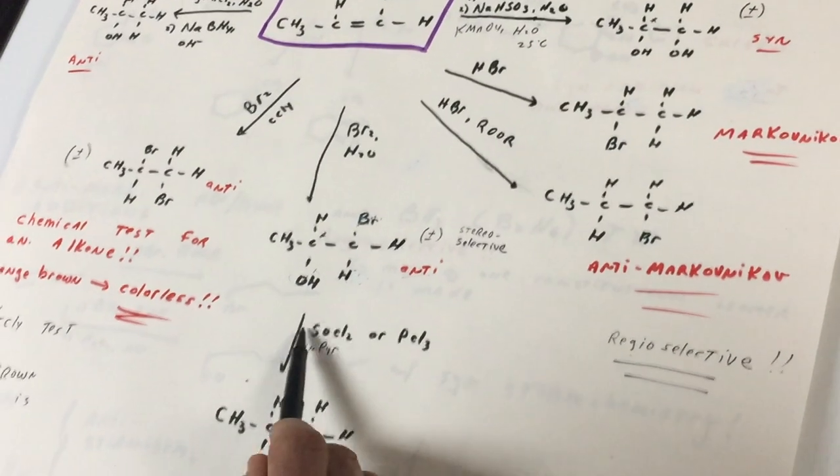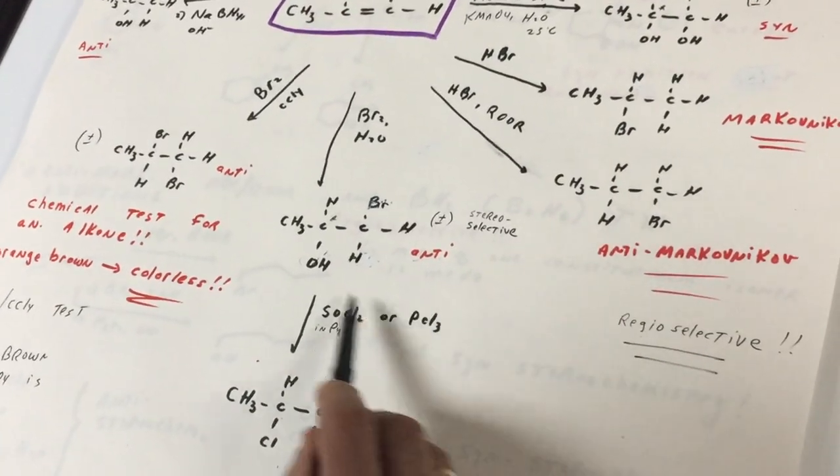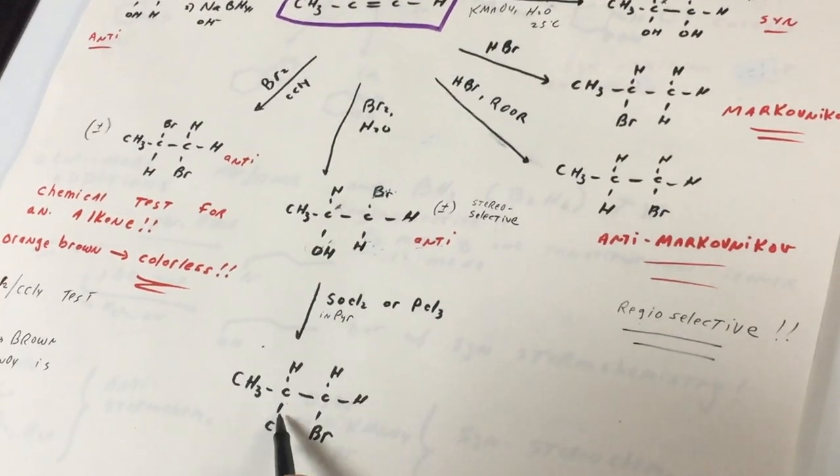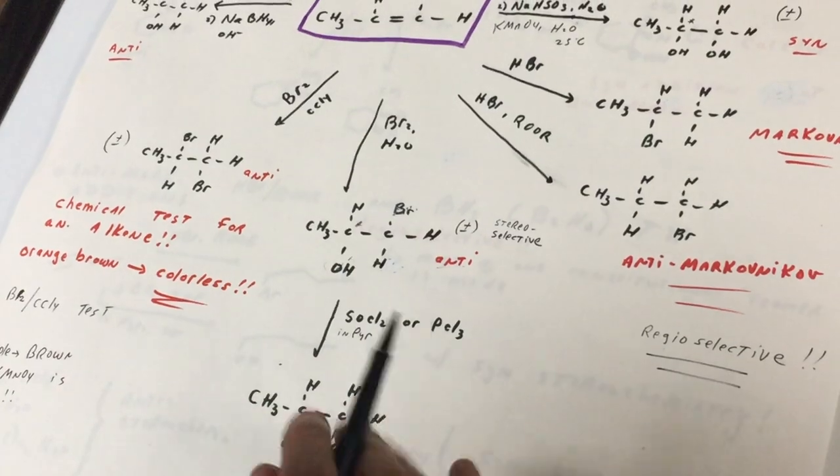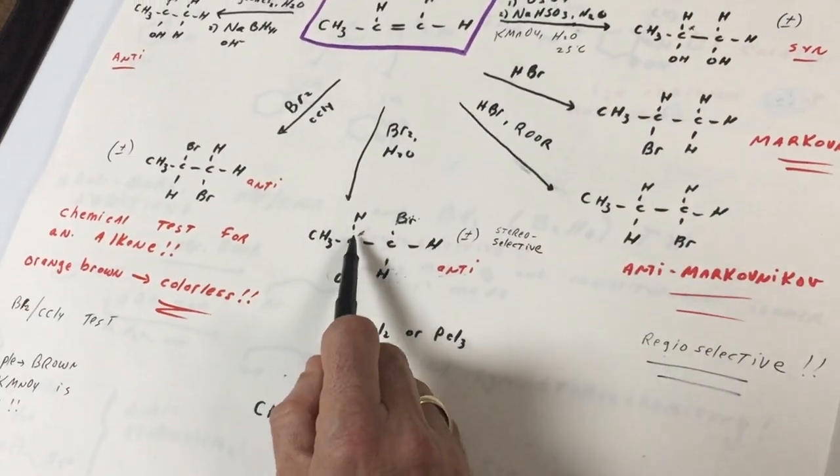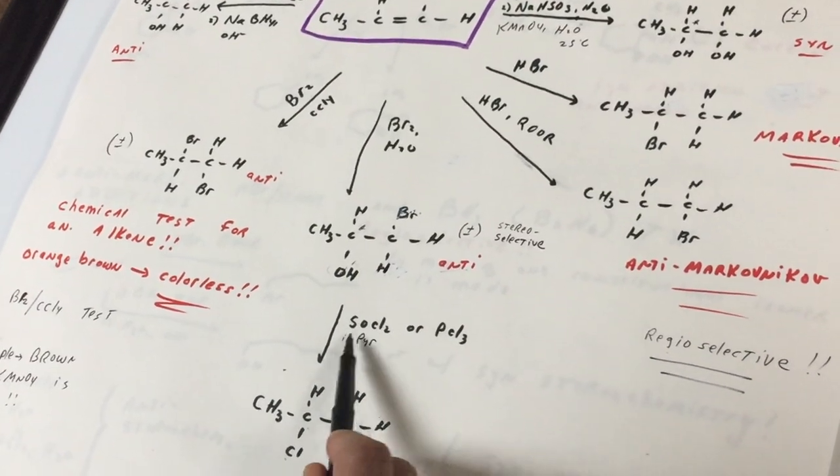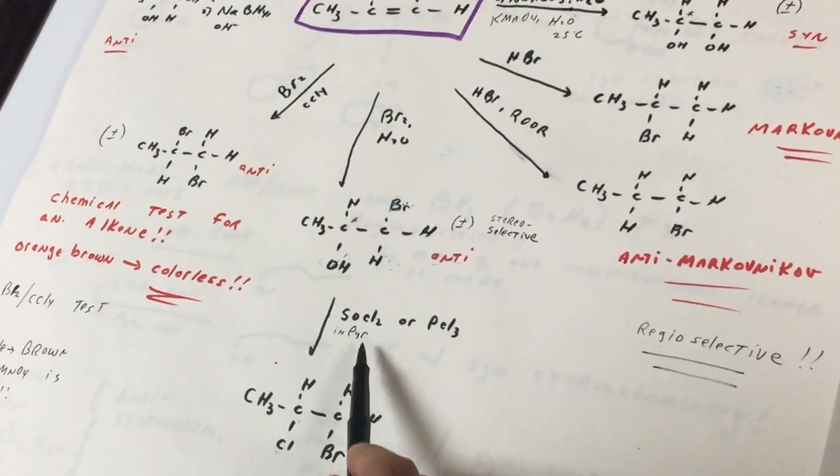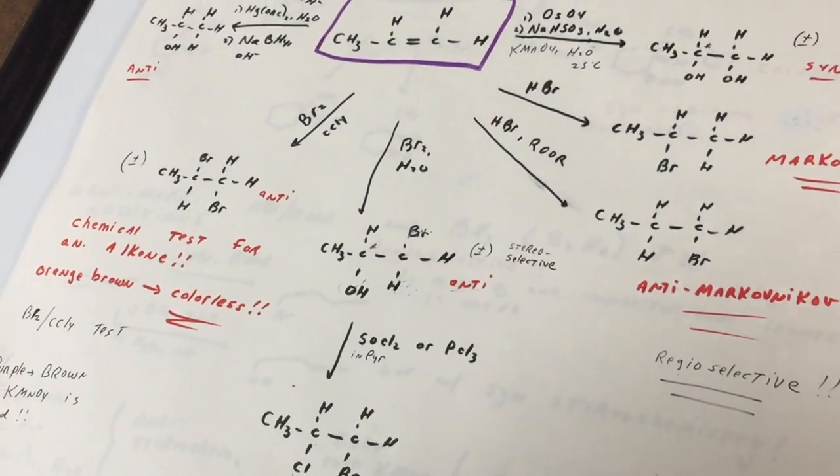If you press this a little further with SOCl2 and pyridine or PCl3, the OH is simply replaced with a chlorine, and usually that would be an inversion. I'm not going to kill you in this example, but hypothetically, if this was an R and you hit it with SOCl2 and pyridine or PCl3, the stereochemistry would become S through an inversion.